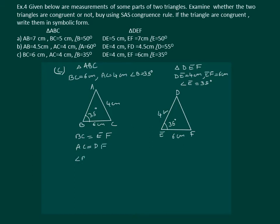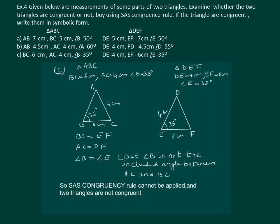Also, angle B = angle E, but angle B is not the included angle between the equal sides. So we can say that SAS congruency rule cannot be applied and the two triangles are not congruent.